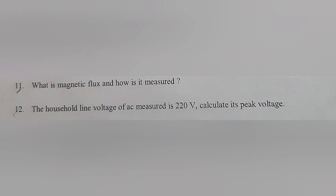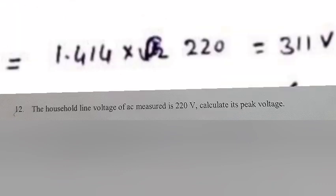Question 12: The household line voltage of AC measured is 220 volt. Calculate its peak voltage. Answer: Vrms equals Vm by root 2 equals 1.414 into 220 equals 311 volt.